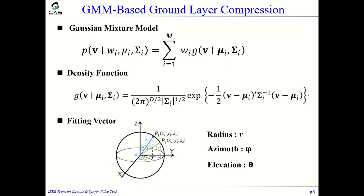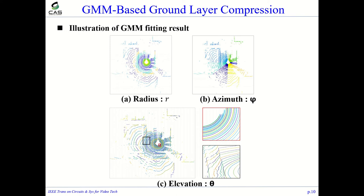Ground layer points are normally modeled with a Gaussian mixture model. Each Gaussian component represents a unit. By fitting different dimension vectors into the Gaussian mixture model, we obtain different results of model fitting. In picture A, the radius of each point is used as a fitting vector, and multiple laser lines are gathered into one class. Picture B shows multiple clusters with different angle ranges. Figure C represents elevation; it produces many clusters belonging to different radar beams. Therefore, we choose elevation as the fitting vector.